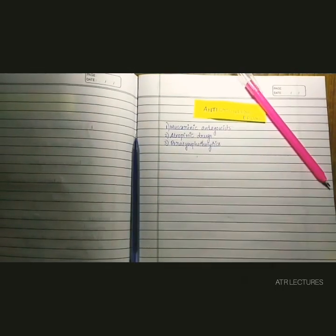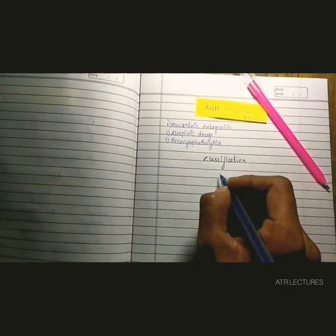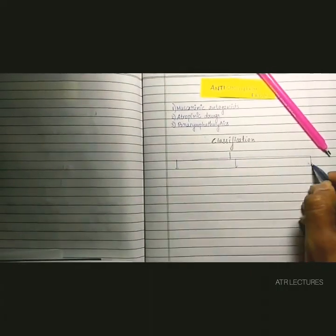In this lecture, you are going to study the classification of anticholinergic drugs. These drugs block actions of acetylcholine through muscarinic receptors.